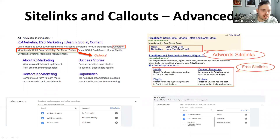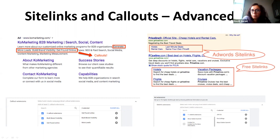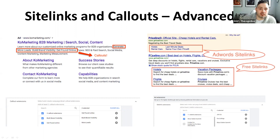If you're representing multiple condo projects, site link extensions make it easy for people to click directly to specific price ranges in a certain area, linking each to that IDX search result within your website.